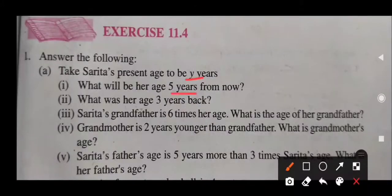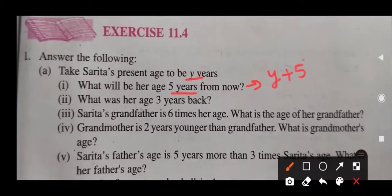We add 5 to the present age of Sarita. So what will be her age 5 years from now? It will be Y plus 5 years. So write down the proper answer: Sarita's age after 5 years will be Y plus 5 years.